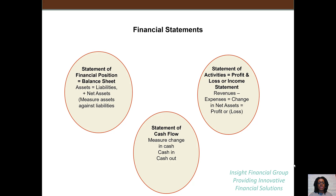The balance sheet — in the nonprofit world called the statement of financial position — lists your assets and your liabilities. In a perfect world, you want your assets to be higher than your liabilities. Your assets are everything you own, such as a bank account or a piece of equipment. Liabilities are everything you owe, such as a loan or how much you owe a particular vendor.